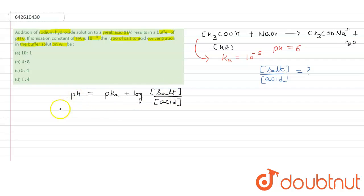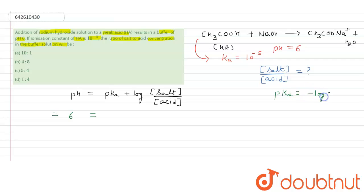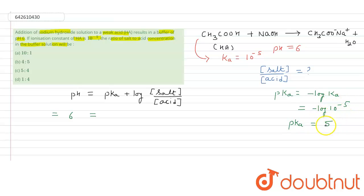We have pH = 6. Now we need to find pKa. We know that pKa = −log(Ka) = −log(10 to the power minus 5). Since log 10 = 1, the pKa equals 5.